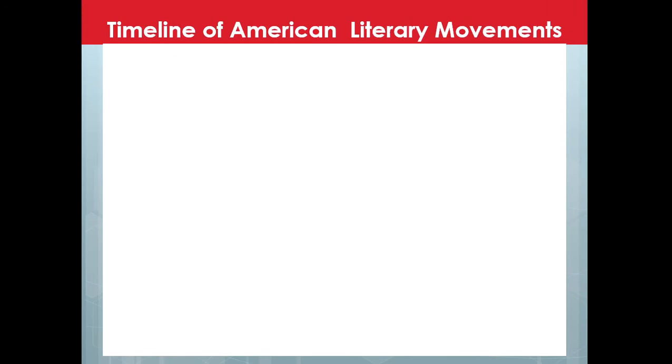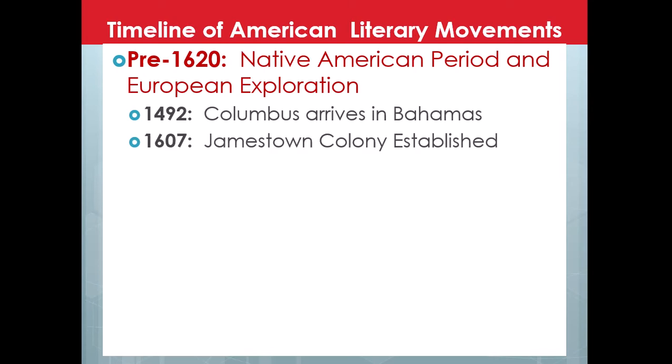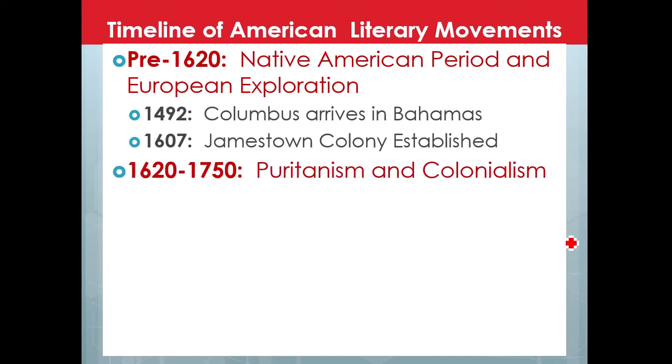So let's take a look at the timeline. I'm going to go through each one of these literary movements and describe it in more detail, but just so you have a general overview. Pre-1620, for American literature, that's going to be the Native American period and European exploration — really before the colonies were fully established. 1492: Columbus arriving in the Bahamas. 1607: the Jamestown Colony being established.